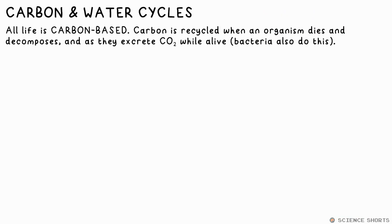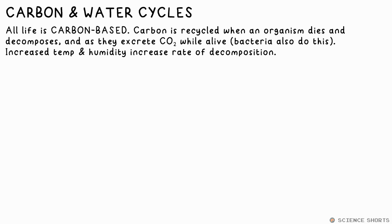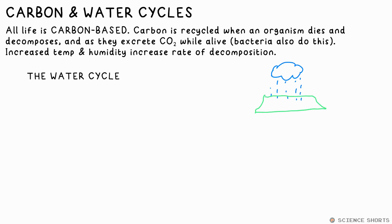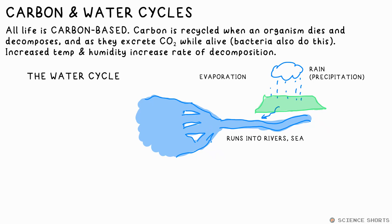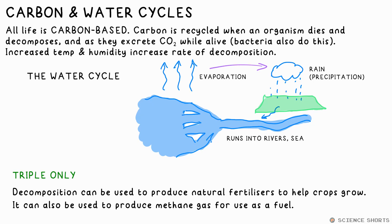All life is carbon based, which means that when organisms die the carbon is recycled, which ultimately can be used to make more organisms. One way is when CO2 is produced, which plants then use to grow. Bacteria also release CO2 due to respiration when an organism undergoes decomposition. Temperature and other factors can affect rate of decomposition. Water also follows a cycle — rain falls (precipitation), then runs into rivers, then into the sea, then it's evaporated, and the cycle continues. Farmers utilise decomposition to produce natural fertilisers for crops, and it can also be used to produce methane gas to be used as fuel.